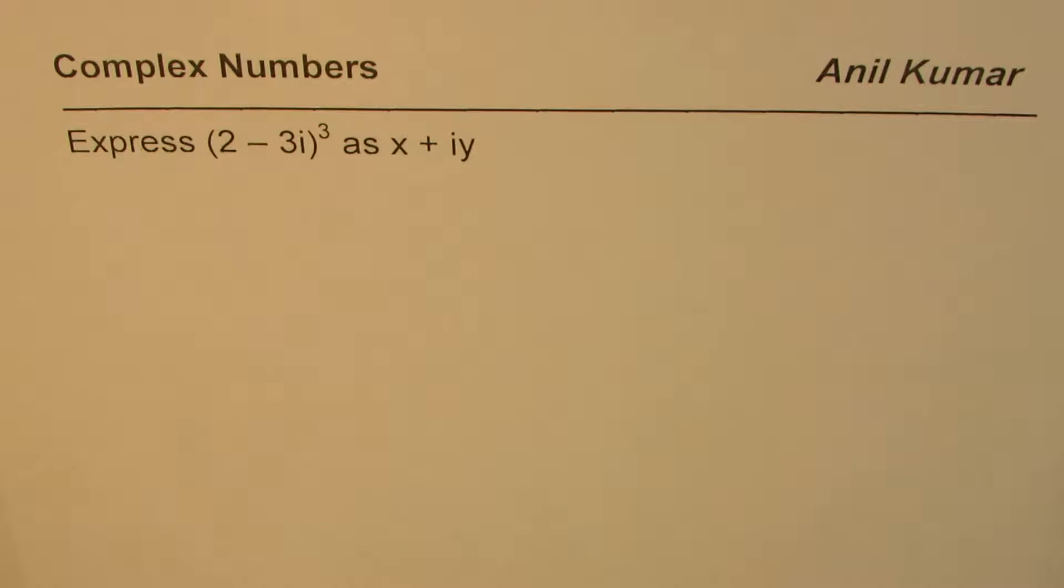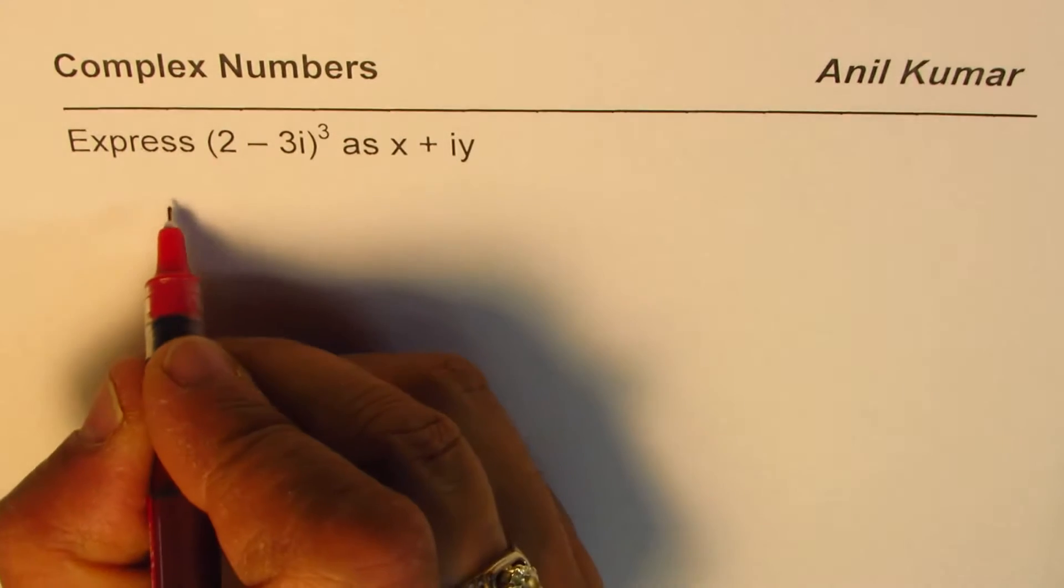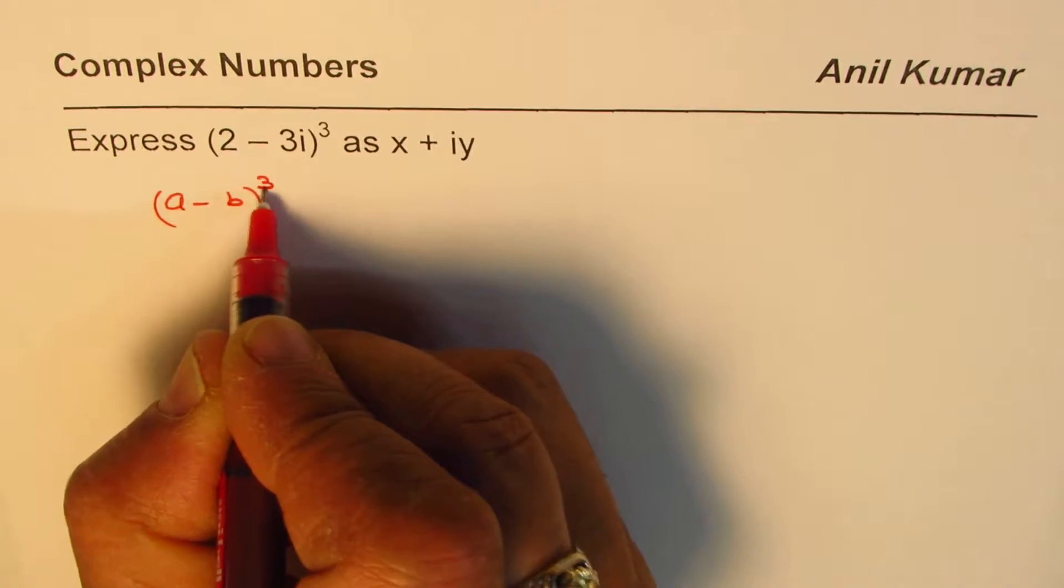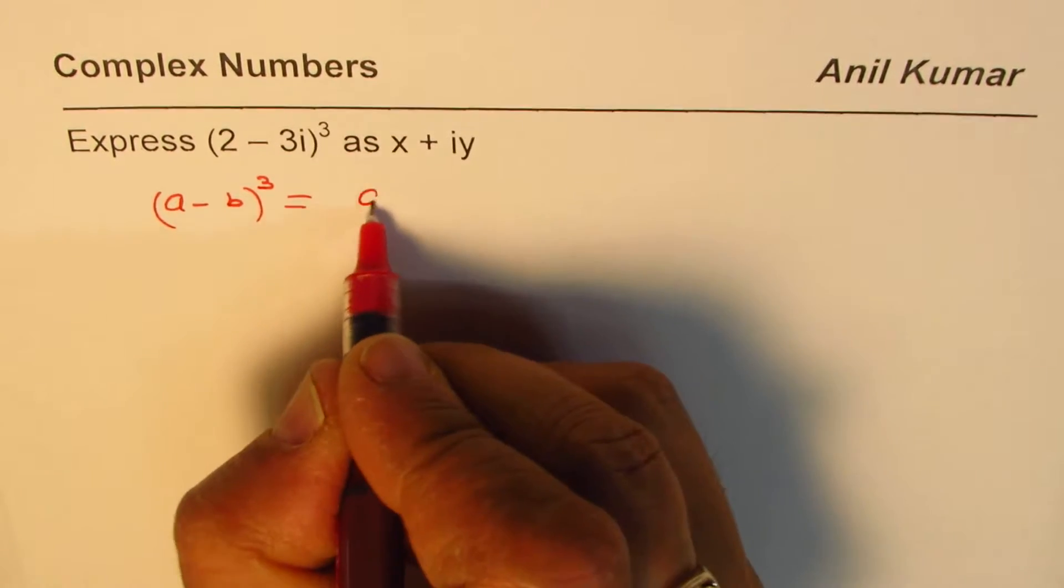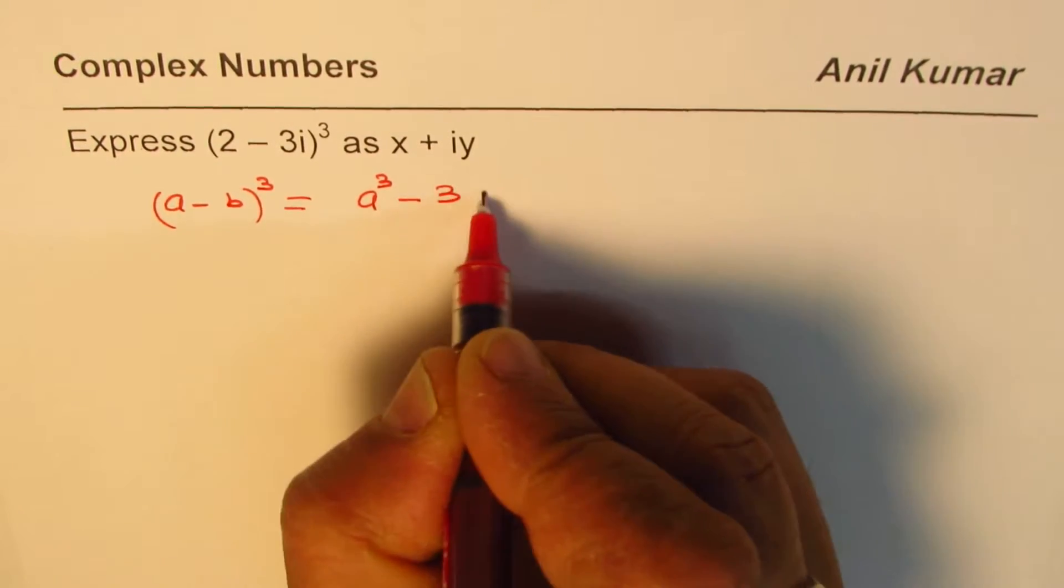I'm Anil Kumar and in this video we will see how to find the cube of a complex number. We know the formula: (a - b)³ equals a³ minus 3a²b plus 3ab² minus b³.